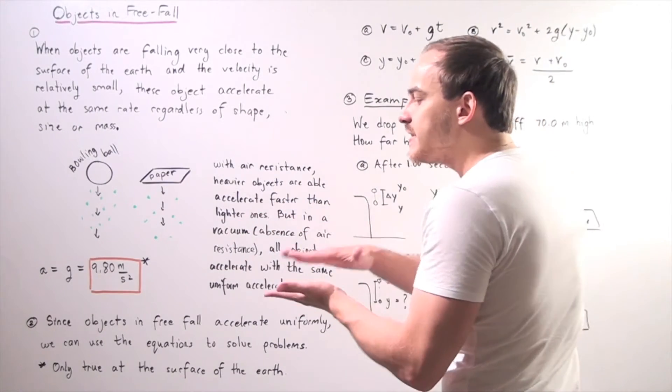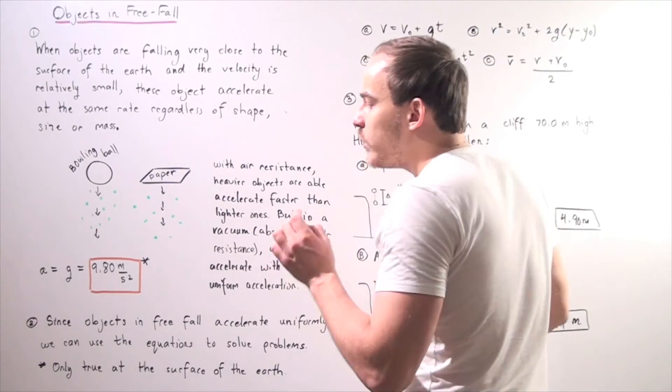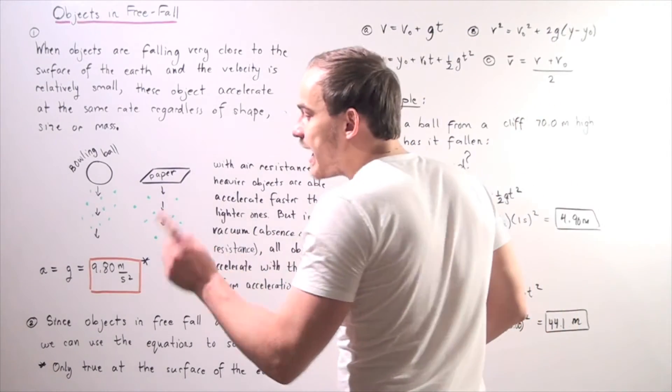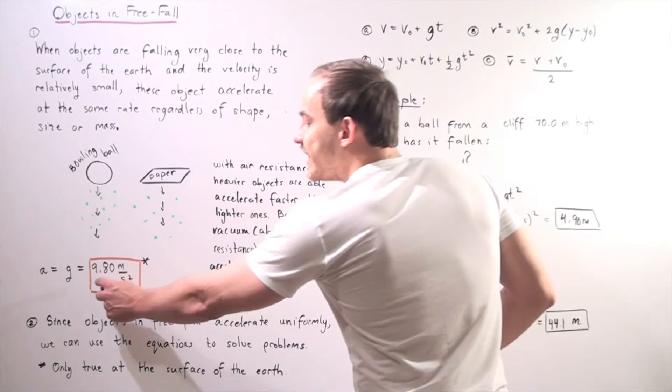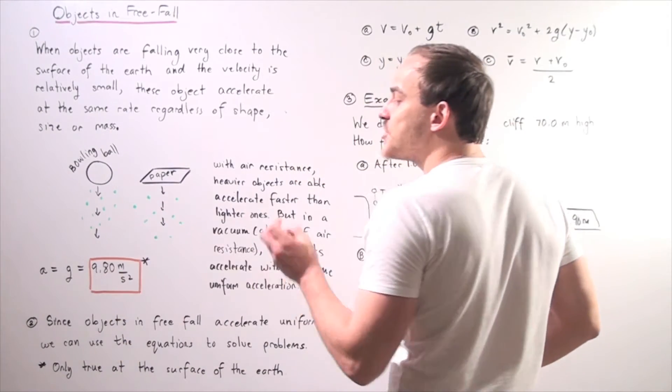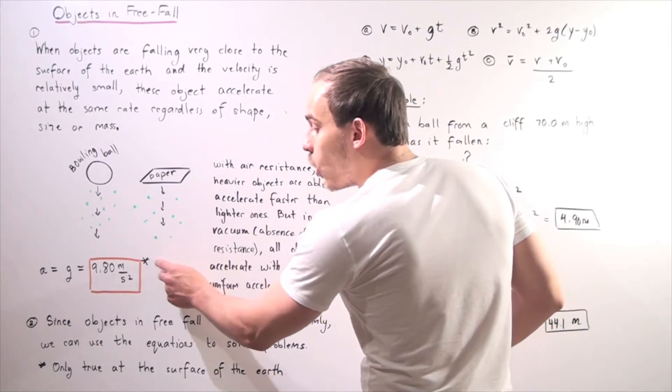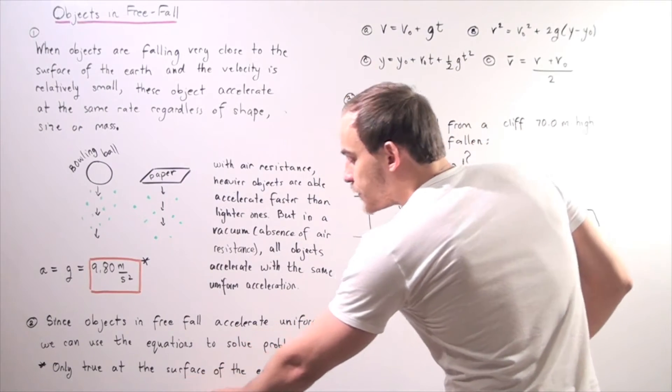And at the surface of the Earth, we calculate our acceleration to be 9.80 meters per second squared. Notice that this only works at the surface of the Earth.